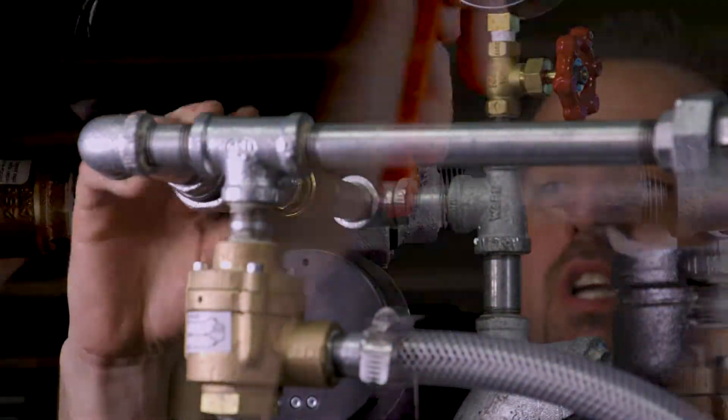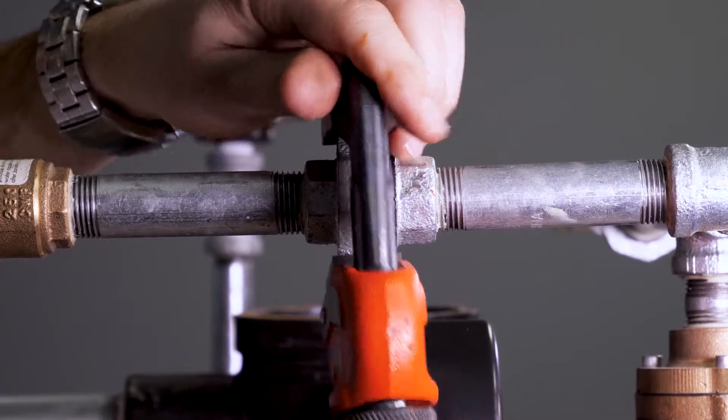When tightening the cover bolts, make sure to tighten them in a star shaped pattern. Once installed and tightened down, we can now close the union on the air supply portion of the trim.